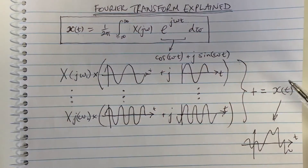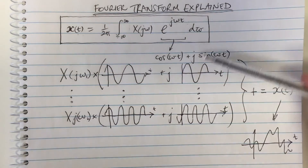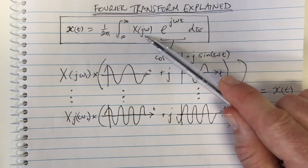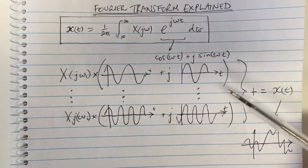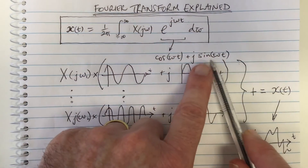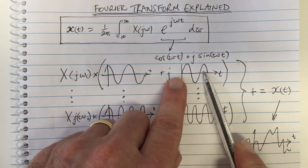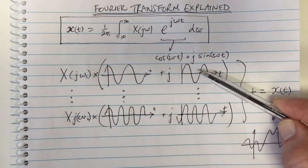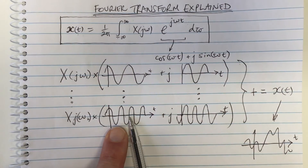An interesting thing is if you have a symmetric function — symmetric with negative frequency and positive frequency — then you'll have negative omegas, and the negative omega means there's a minus sign out in front of the sine terms. So the negative in the sine cancels the positive in the sine, and you're only left with a real-valued signal.